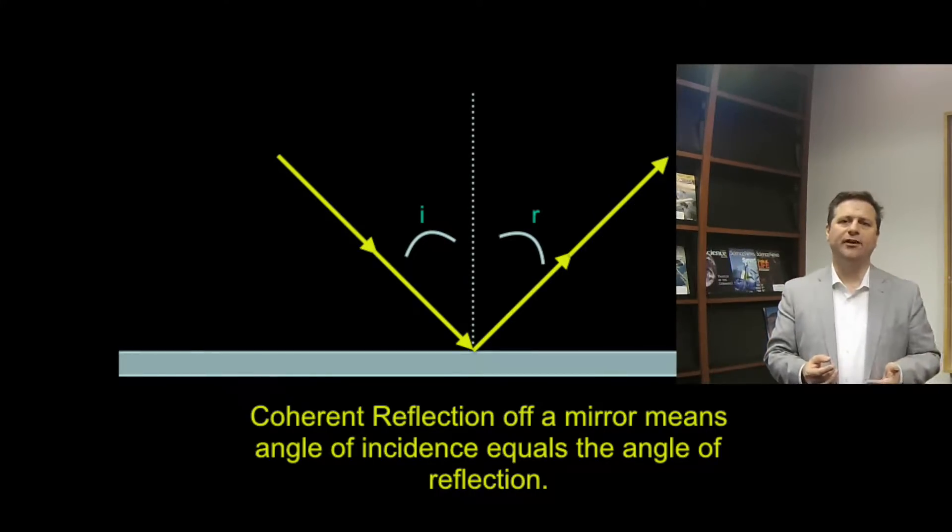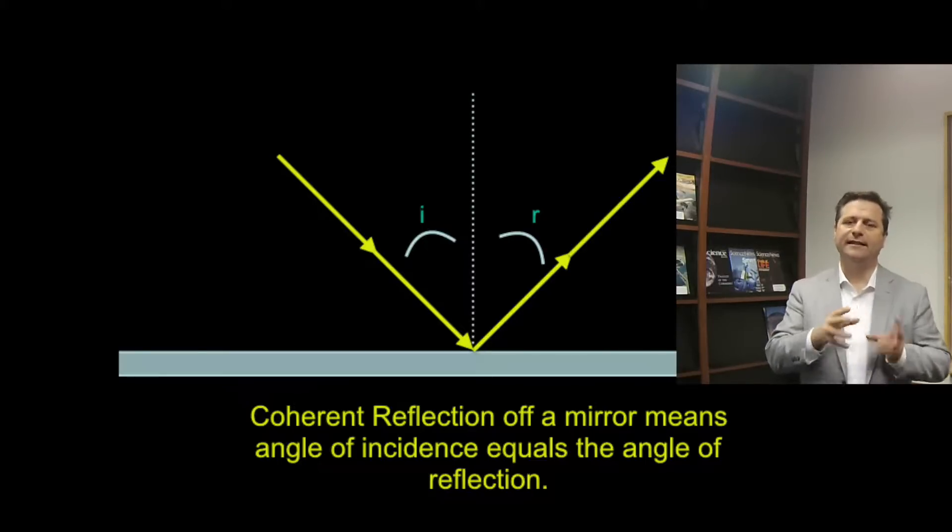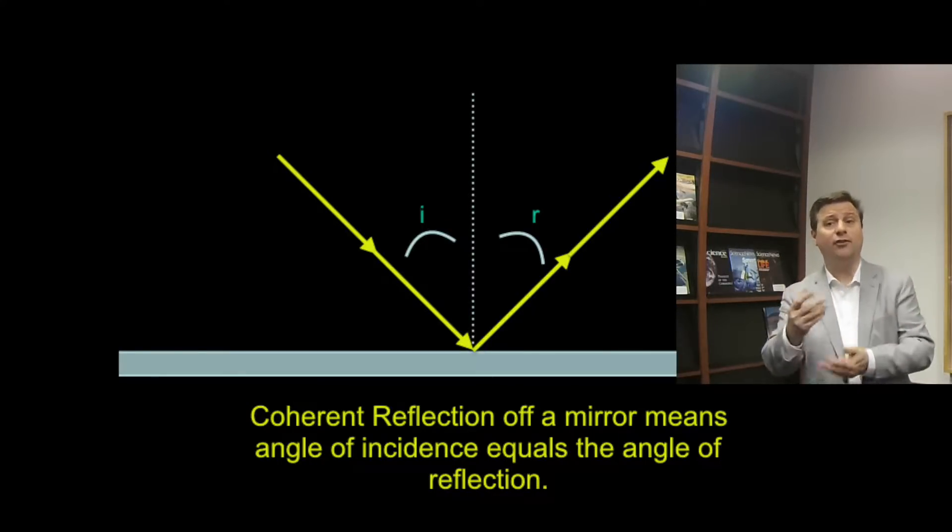This is kind of like when you throw a ball against a wall at an angle and it reflects off. Euclid started thinking maybe light acts like a particle because it bounces off of surfaces like a particle does.